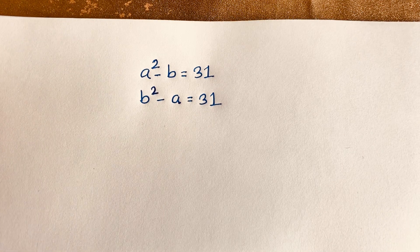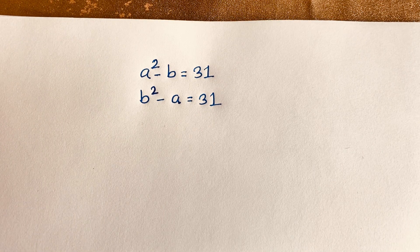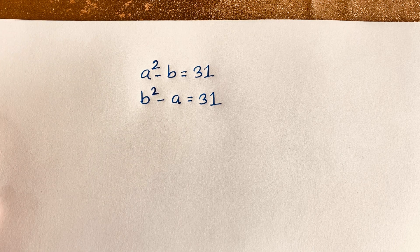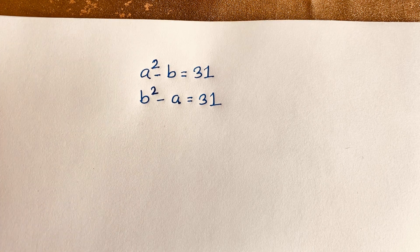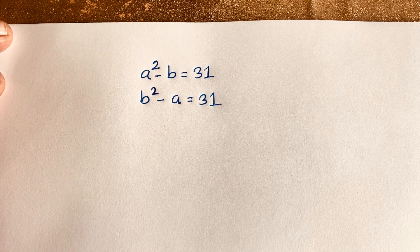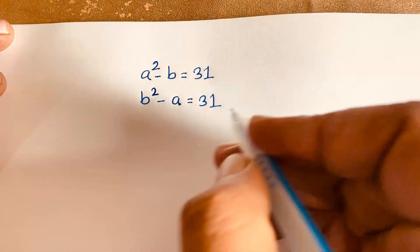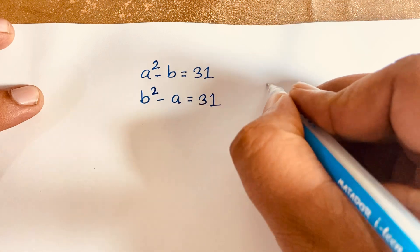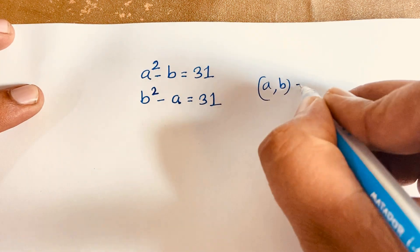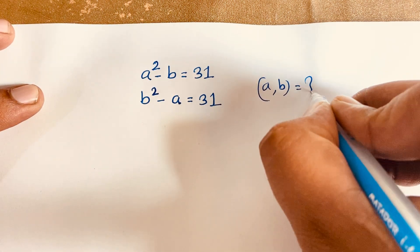Hello everyone. In this video we have solved this German Maths Olympiad question. Our question is A squared minus V is equal to 31, and V squared minus A is equal to 31. We will find out what is the value of A and V in this Maths Olympiad question.